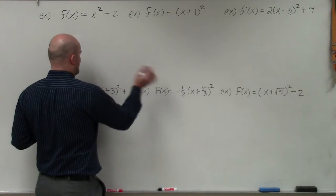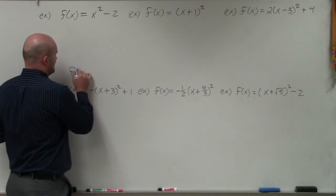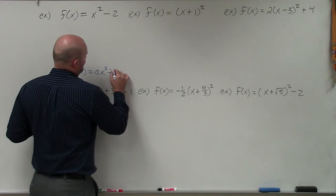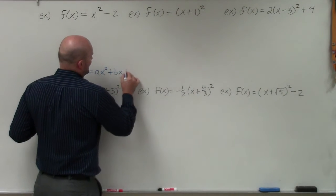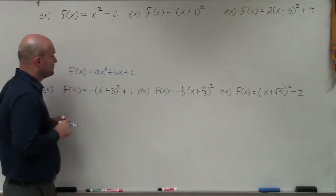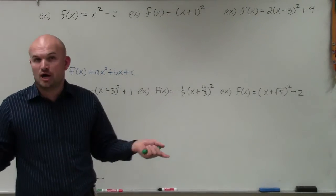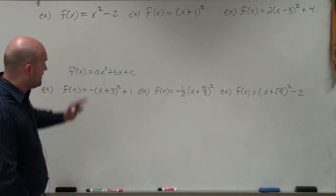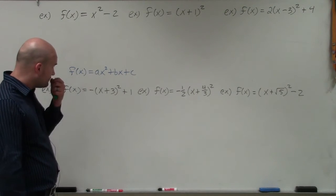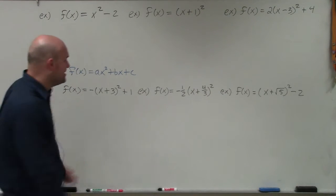Let's talk about standard form first. Standard form is ax squared plus bx plus c, where a cannot equal 0, and a, b, and c are all real numbers. That's our standard form — something that we're very used to, or maybe just getting used to.